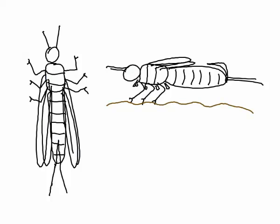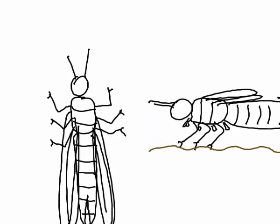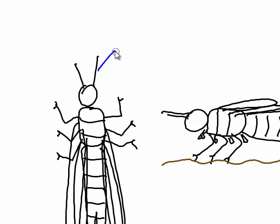Here is a quick diagram of a stonefly — dorsal view from the top and lateral view from the side. These, of course, are antennae. They're not listed in our data for the cladogram because all stoneflies have them, so they don't really tell us anything useful.